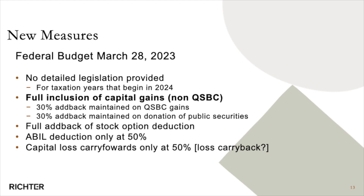Now let's talk about the new proposals introduced by the federal government in March 2023. There's no current draft legislation — it's just a proposal — but it's for taxation starting in 2024. A major change in the federal proposals is now a full inclusion of capital gains into the AMT net adjusted taxable income. So instead of being at 80%, it's at 100%. This is like a disguised increase of your capital gains inclusion rate.